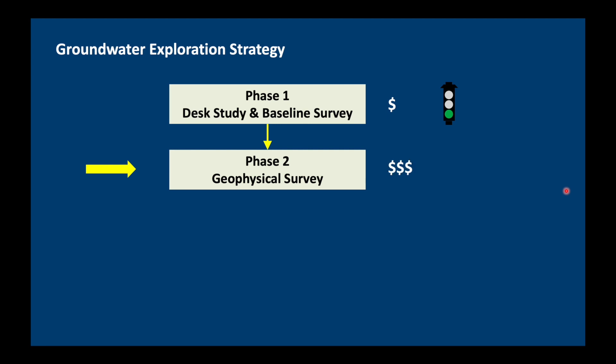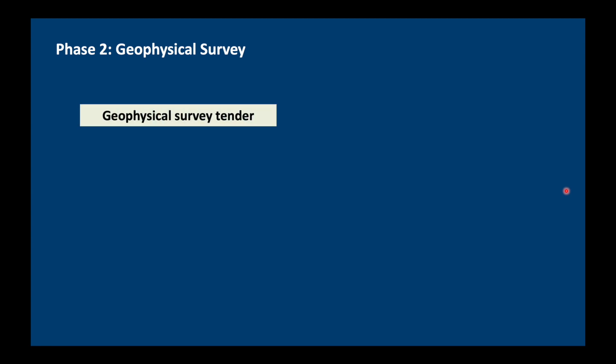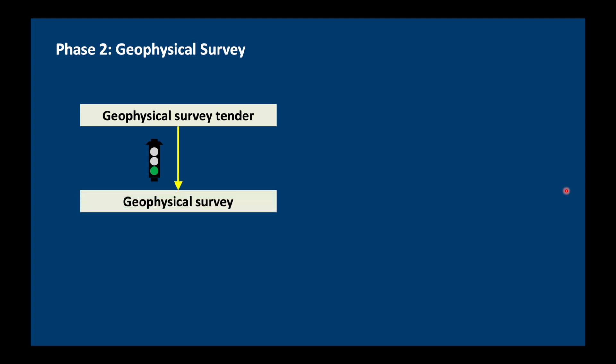Let's assume that phase one is completed successfully and we are now going to do phase two, which is the geophysical survey. The geophysical survey is a little bit more expensive, but at the end of it we can decide whether to stop the project, proceed with caution, or give it a green light. This is the advantage of the phased approach of groundwater exploration — at any point we can stop the project if we think the risks are too high. Now we launch the geophysical survey tender, and before we award it to a contractor we have to make sure that this person or company is actually able to do the geophysical survey. If we just award to the cheapest contractor and they do a poor job, basically our whole project will fail. So it's very important that we select the right people to do the job.